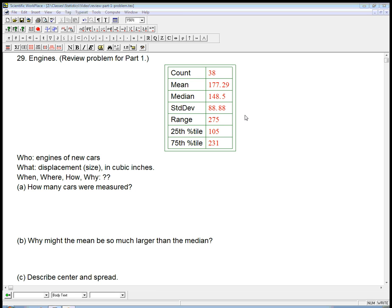This is a review problem for part one of Bach, Vellman, and DeVos' stats. It's about measuring engines, specifically the displacement, which is the internal size, total size of the cylinders, in cubic inches. And it's engines of new cars.